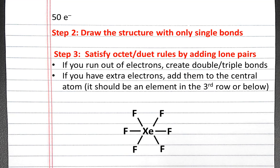The third step is to satisfy the octet and duet rules by adding lone pairs of electrons. If we run out of electrons, we can create double and triple bonds. And if we have extra electrons, we can add them to the central atom if the atom is in the third row or below in the periodic table. So we begin by satisfying the octet rule for all of the fluorine atoms, which are the peripheral atoms.